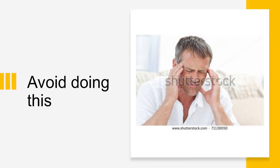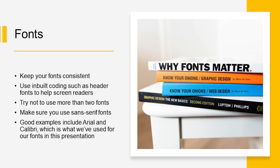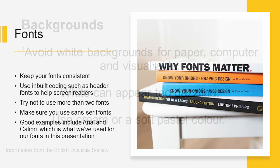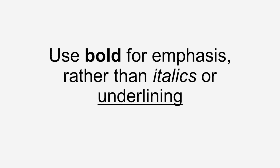We've all seen it and it's a bit cringe, so avoid doing that. Keep your fonts consistent — try not to use more than two fonts and make sure you use sans-serif fonts. Sans-serif literally means without feet, so they don't have those little bottom bits that can actually make fonts hard to read. Good examples include Arial and Calibri, which is what we've used for our fonts in this video. Avoid white backgrounds for paper, computer and visual aids — white can appear too dazzling, so use cream or a soft pastel colour. Also, use bold for emphasis rather than italics or underlining.